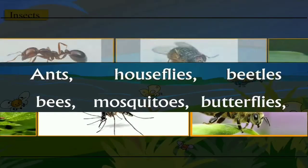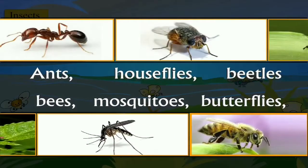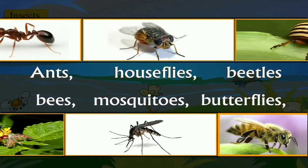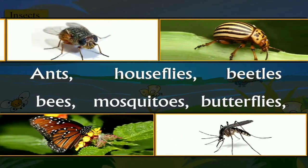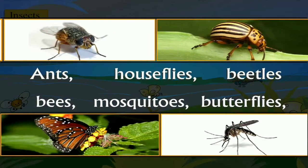Insects are the largest group of animals on earth. Some of the common insects we see around us are ants, bees, house flies, mosquitoes, butterflies, beetles, etc. They are found almost all over the world.